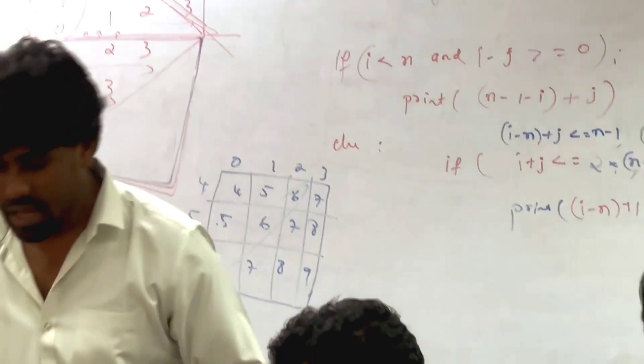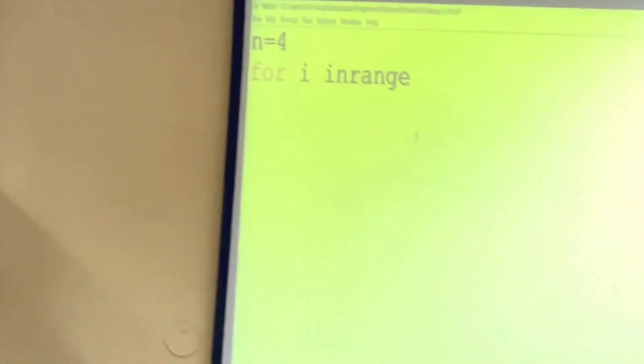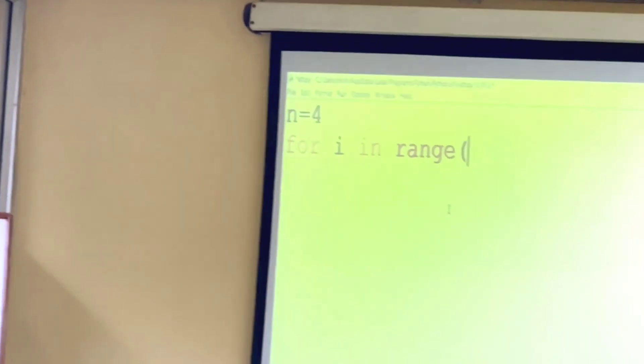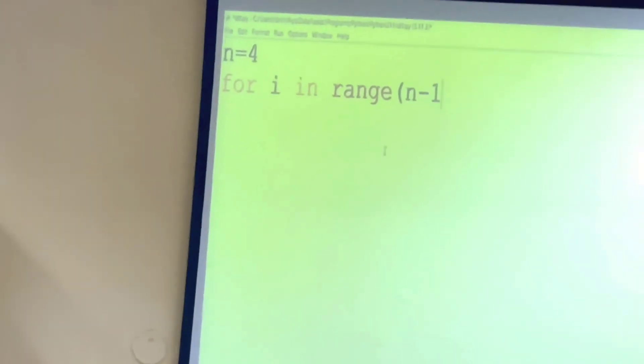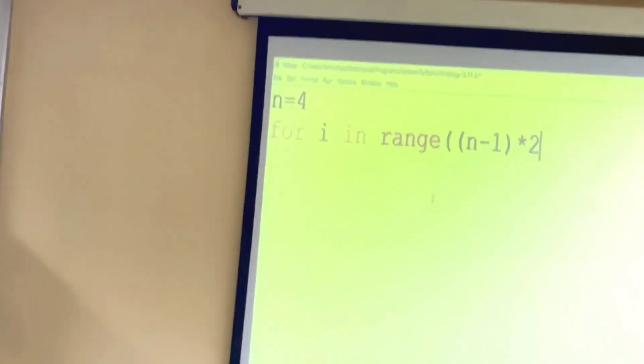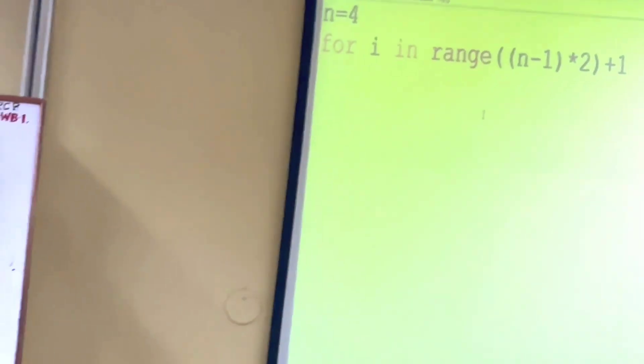Now how do I do that? I will come here and do the program. n is supposed to be 4. i in range of — what is the equation we have written? n minus 1, I'll put it in a bracket. Into 2 plus 1. Into has the highest precedence but still I'll write it in a bracket — no problem with that. Then I'll put a colon. j in range of n — colon.